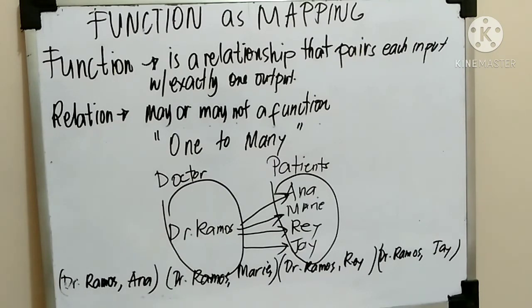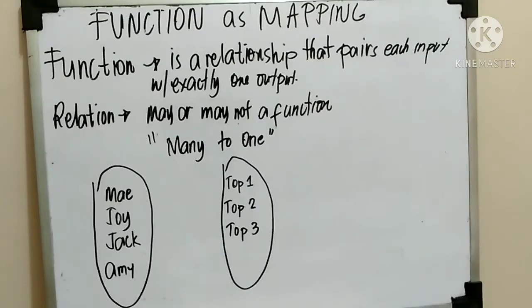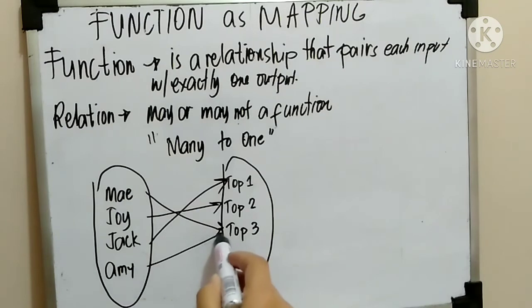The last one is many to one. That is the last classification of correspondence, many to one. For example, itong estudyante - I mean, ito yung top nila. For example, si May ay top 3, si Joy ay top 2, si Jack naman ay top 1, si Amy ay top 3.